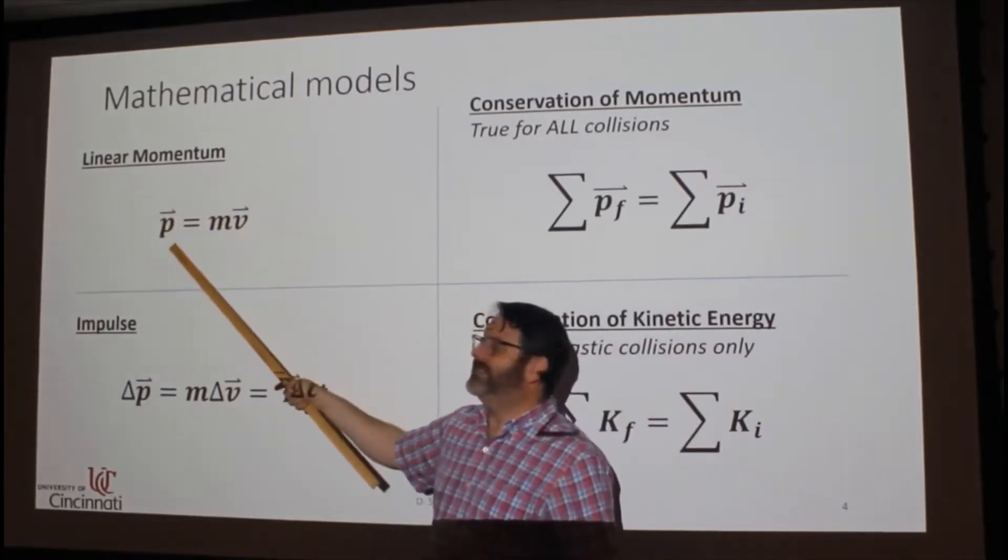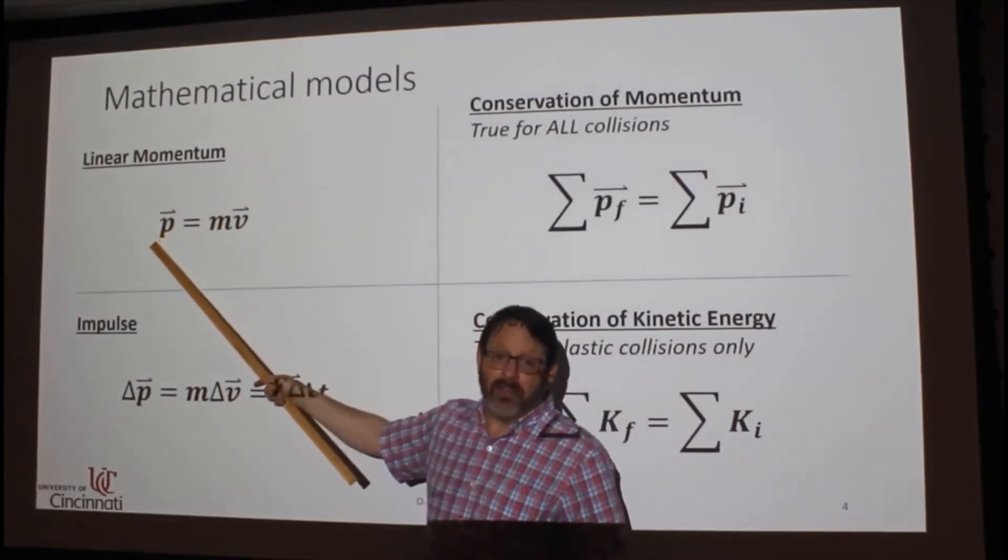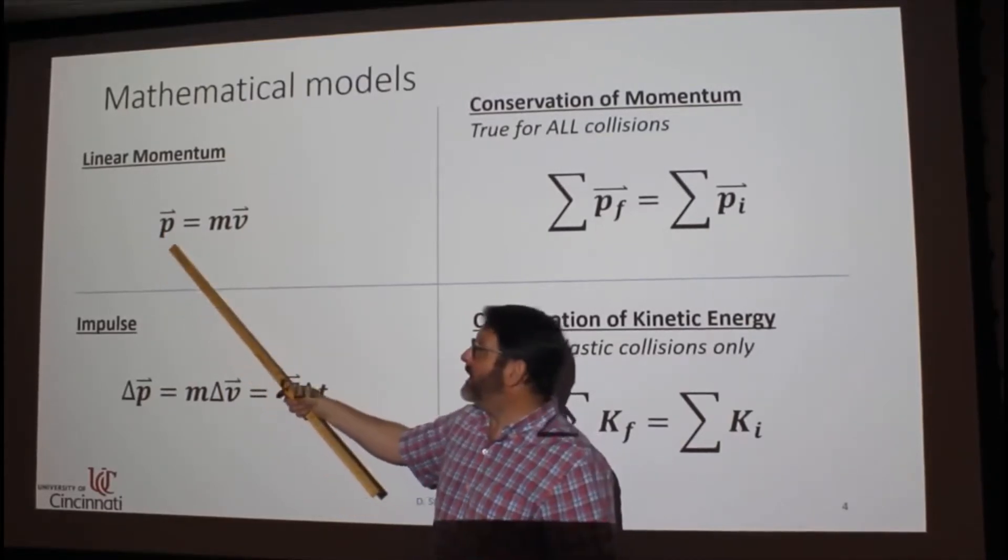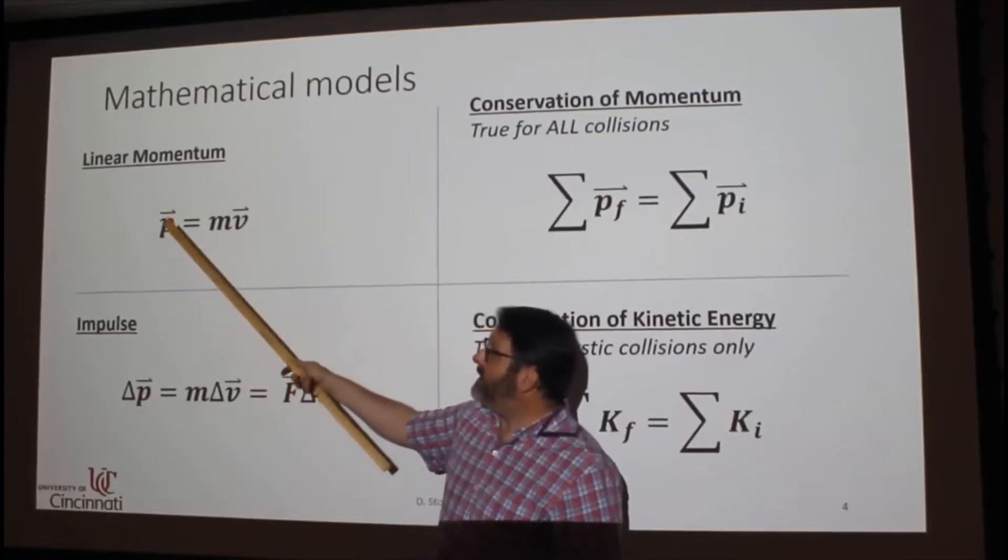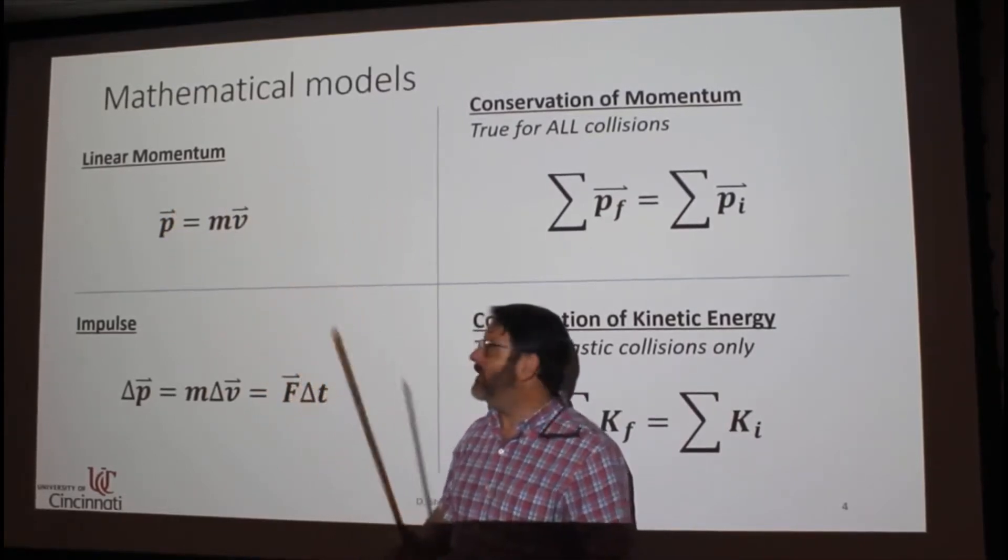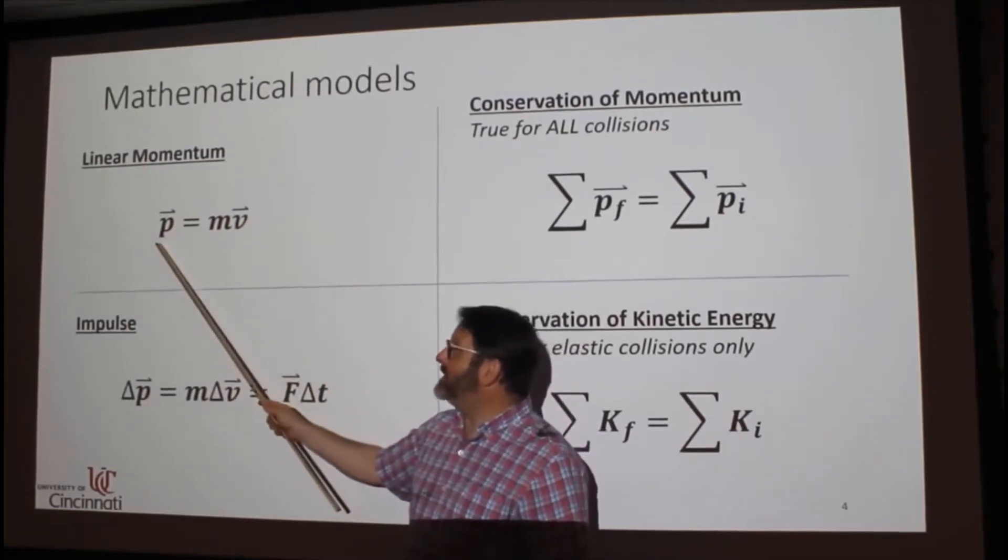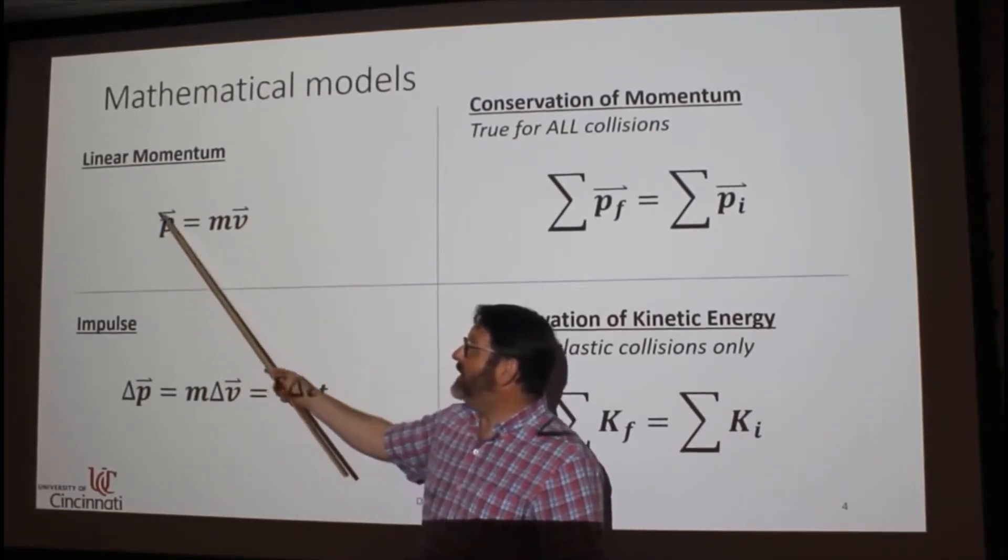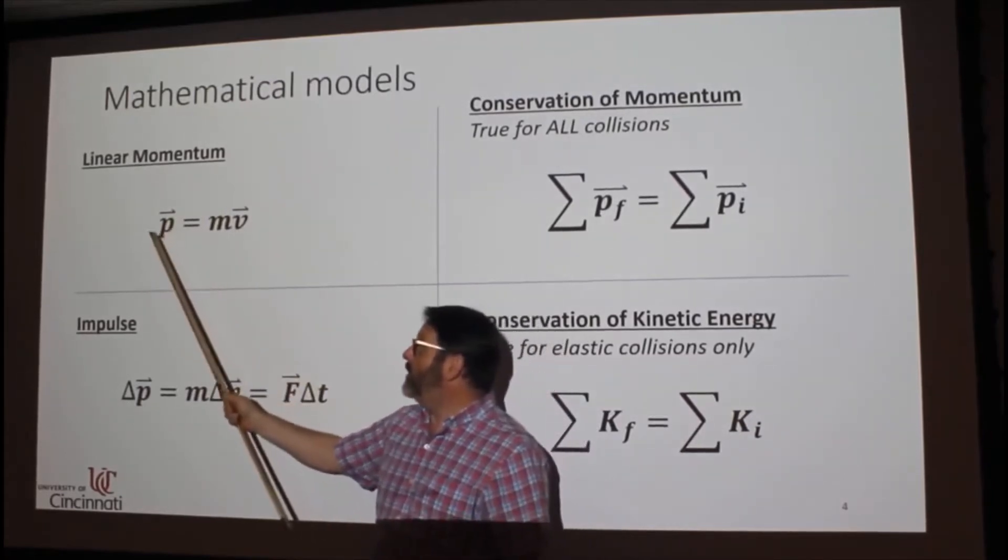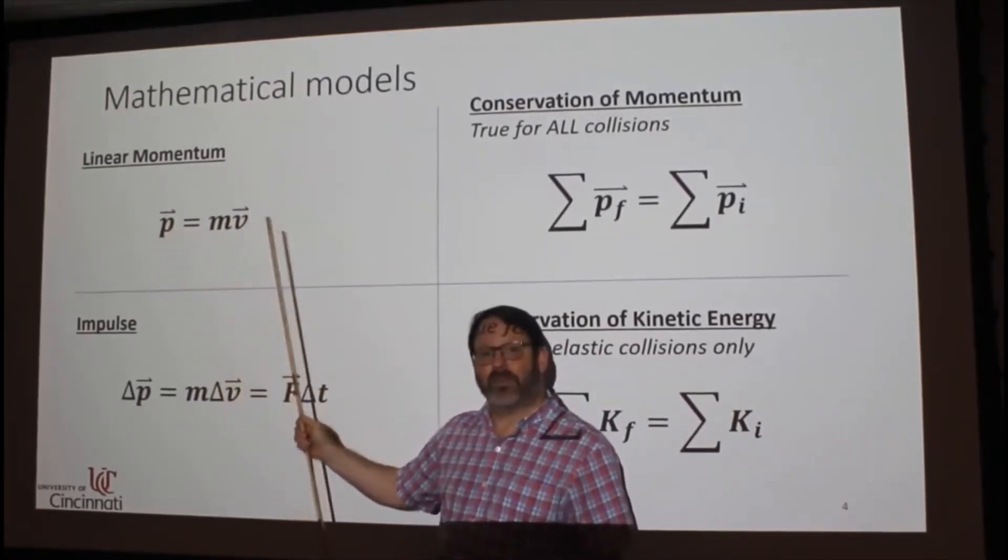Momentum is represented by P. Now, P before was power, but that was a capital P. This is a lowercase p, and this is a vector. Power was not a vector, that was a scalar. So be sure you're paying attention here: lowercase p with a vector symbol. That is the symbol for momentum. Momentum is mass times velocity.